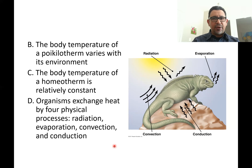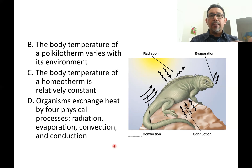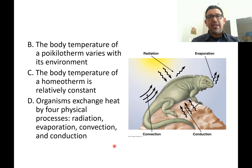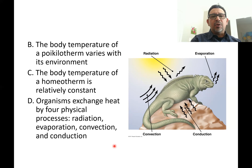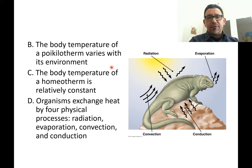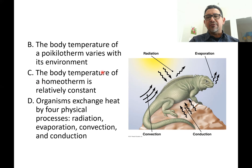These are two different questions. Endotherm asks: what's the source of heat — internal. Poikilotherm asks: does the animal allow its body temperature to fluctuate? If the answer is yes, it is a poikilotherm. Animals sometimes obtain heat from external sources and exchange heat with the surrounding environment.